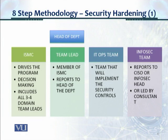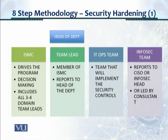This diagram shows which entities are involved in security hardening. There's the Information Security Management Committee, or ISMC, as discussed in the Information Security Transformation Roadmap — they drive the program and do the day-to-day decision-making. The ISMC includes all three to four domain team leads. There's also a head of department, for example the network infrastructure or network operations head. That head of department has a team lead who sits in the ISMC. This team lead is a member of the ISMC and reports to the head of the department.